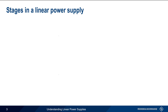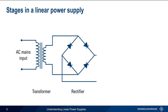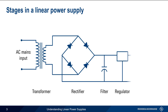A linear power supply consists of four stages. The first is a transformer that converts the AC mains input into lower voltage AC. This lower voltage AC is then rectified using diodes and filtered to produce an approximately constant voltage. Many linear power supplies also include a regulator to help maintain constant output under changing load conditions. Next we'll go through each of these steps and explain in more detail how they're used to convert AC into DC.